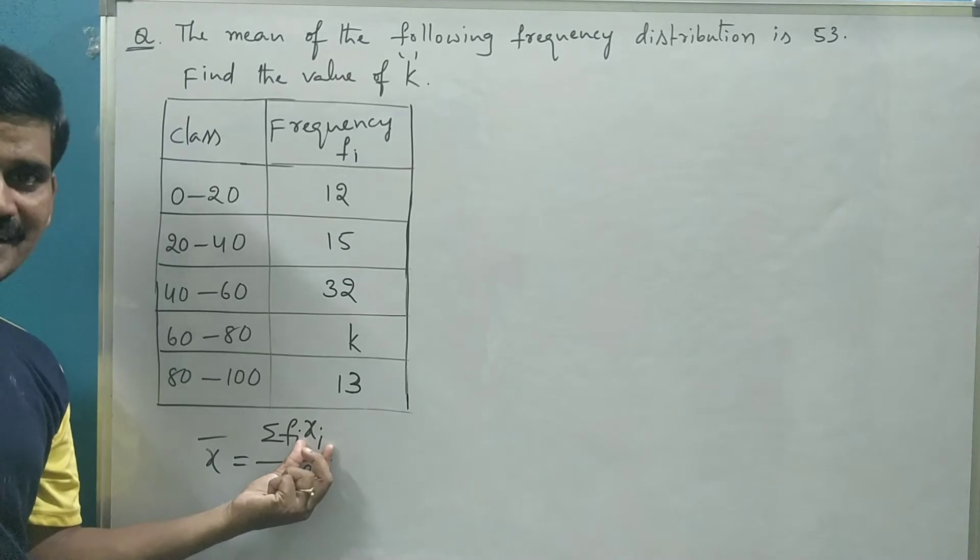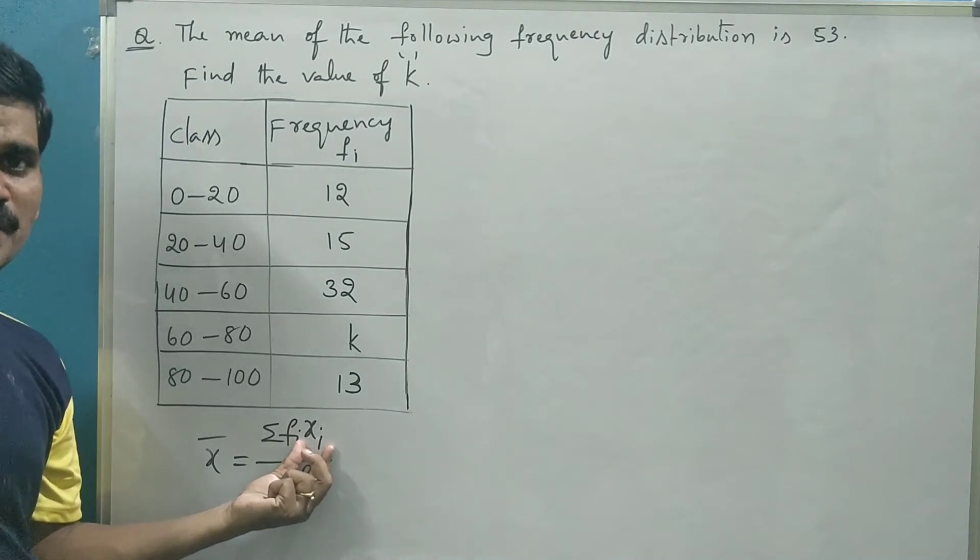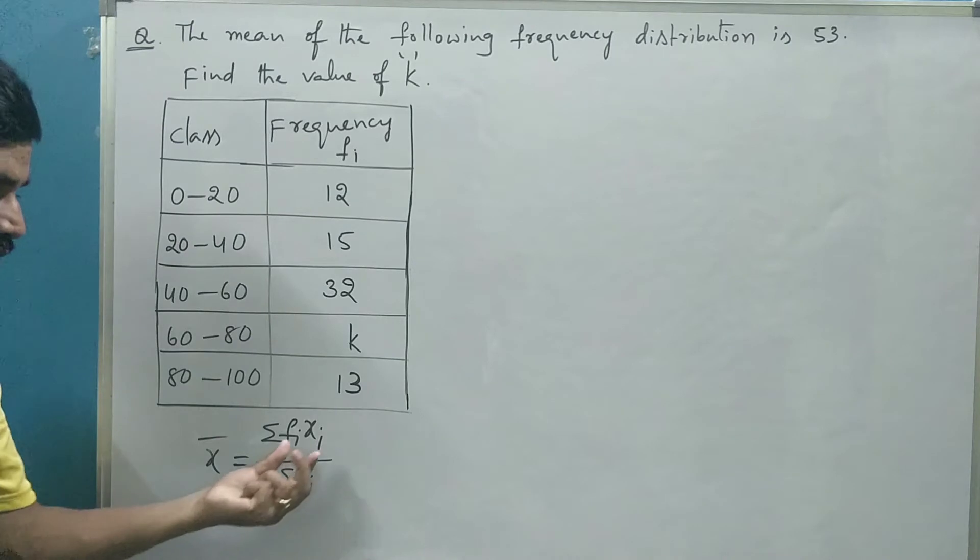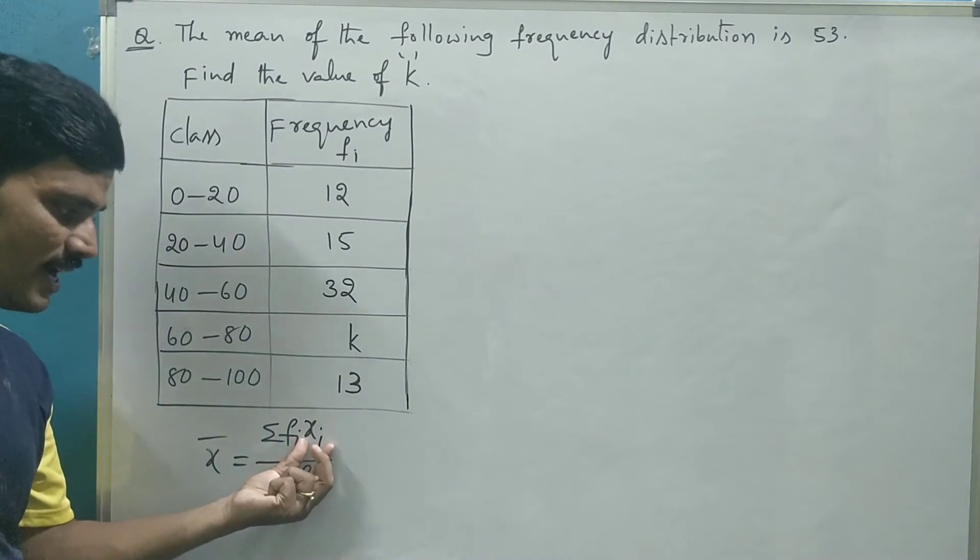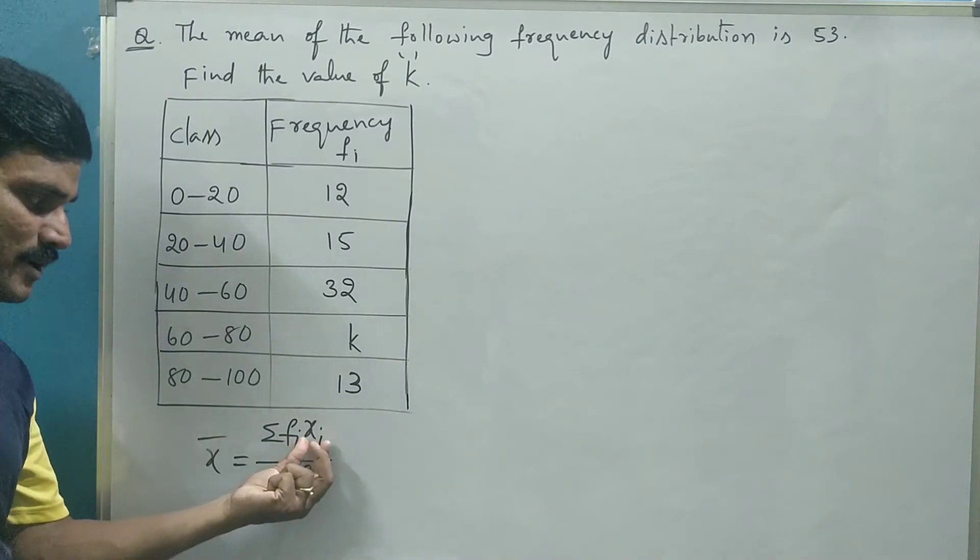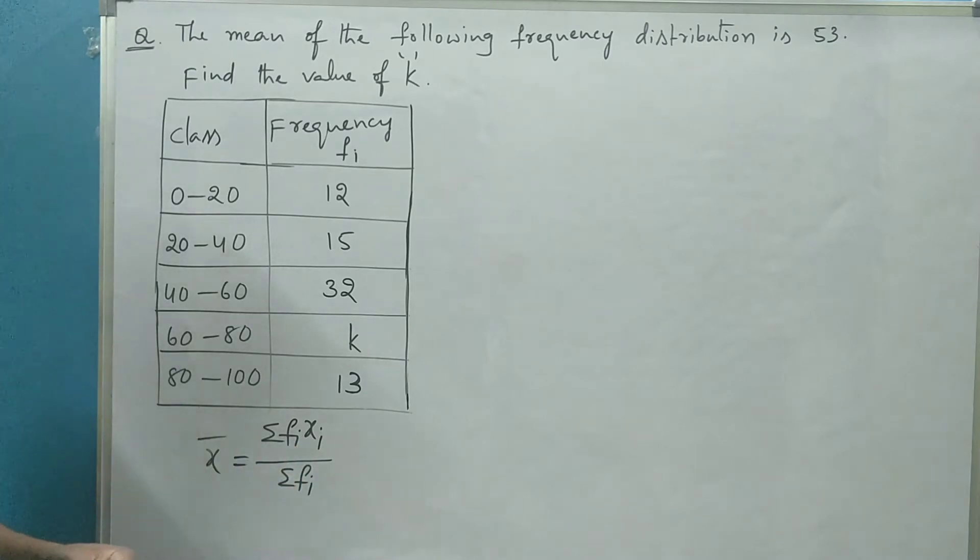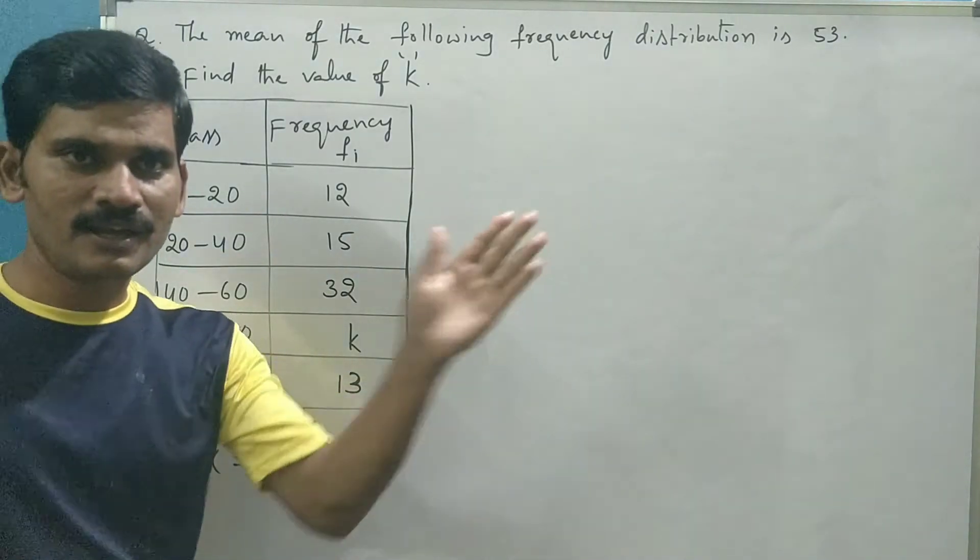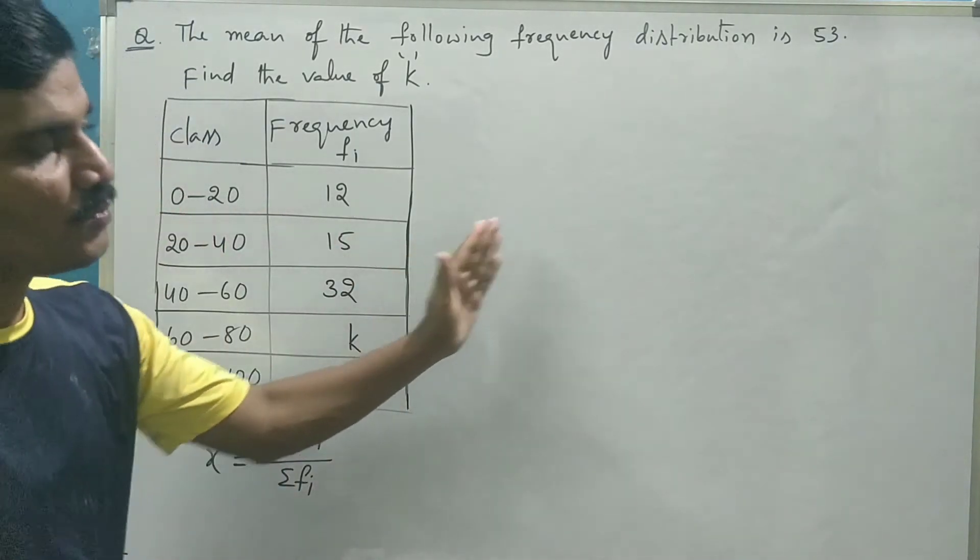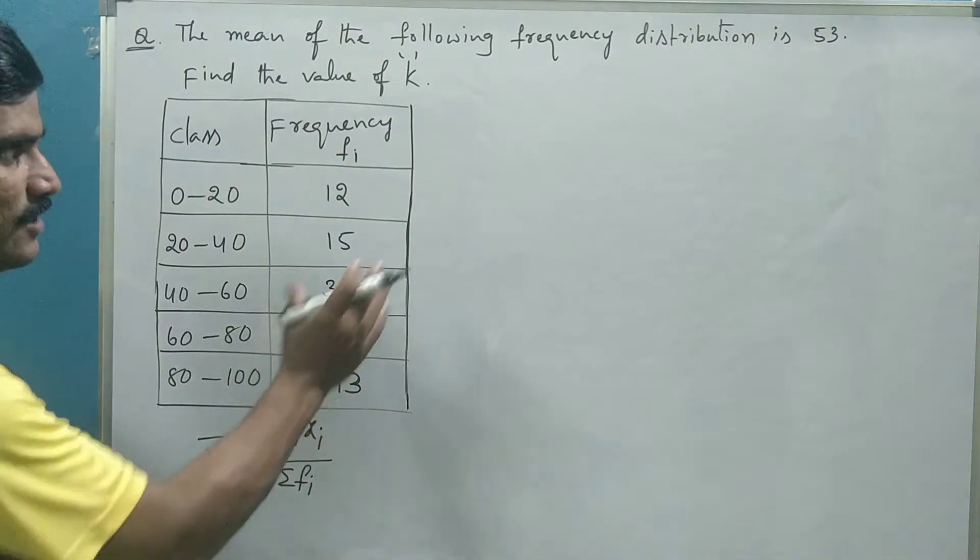Where xi's are class marks or mid values of the class interval. So you need mid values and you need product of mid value with corresponding frequency. So you have to elaborate the table for two more columns. Let us write down two more columns.